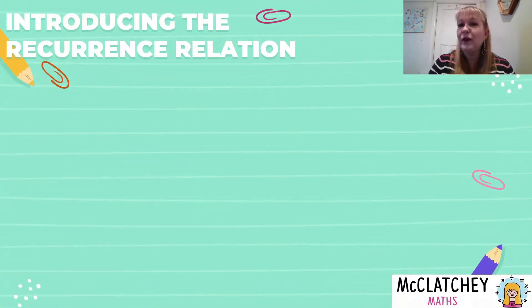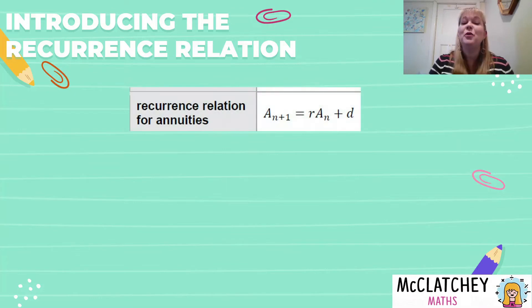First of all, let's talk about the recurrence relation for an annuity. If you're in Queensland, Australia, you'll be getting this on your formula sheet. It looks just like this. Every recurrence relation is like a formula. We have terms on the right hand side, an equal sign in the middle, and then terms on the left hand side.